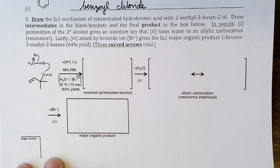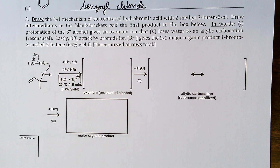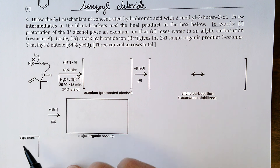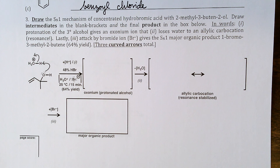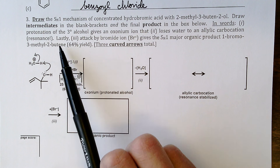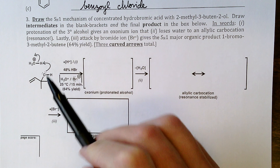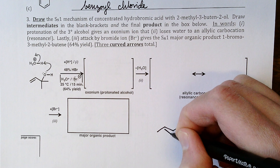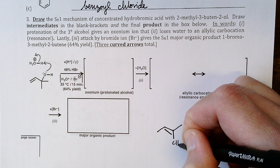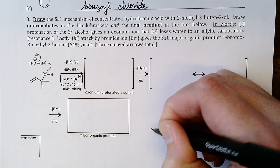Next: draw the SN1 mechanism between 2-methyl-3-buten-2-ol and concentrated hydrobromic acid (48% by weight) in water. It asked you to draw intermediates and gave the steps in words, so pay close attention. Drawing the product first is recommended — the product is 1-bromo-3-methyl-2-butene: carbons one through four, a carbon-carbon double bond at C2, a methyl group at C3 (neither E nor Z), and bromine at C1.